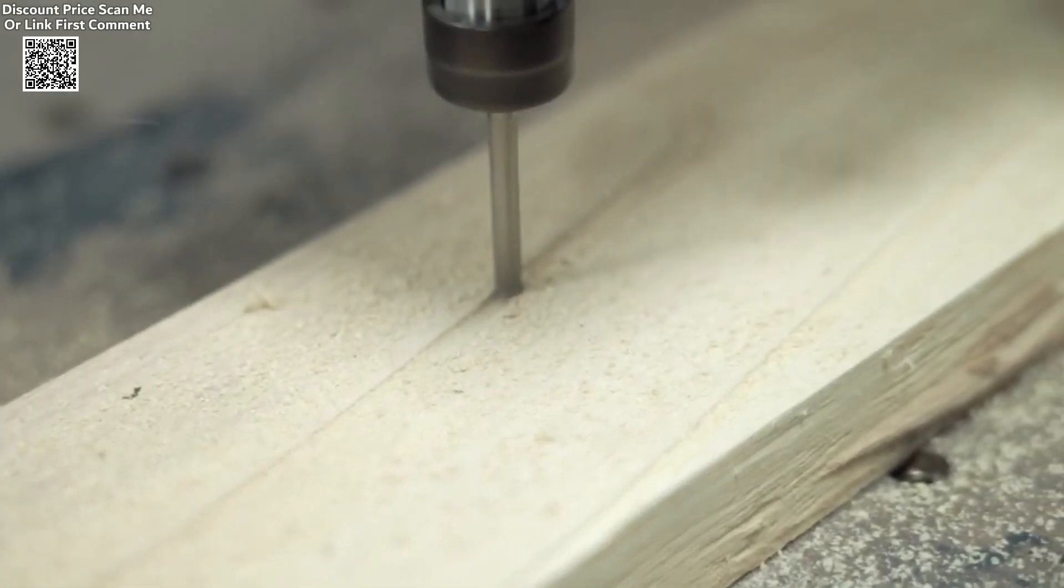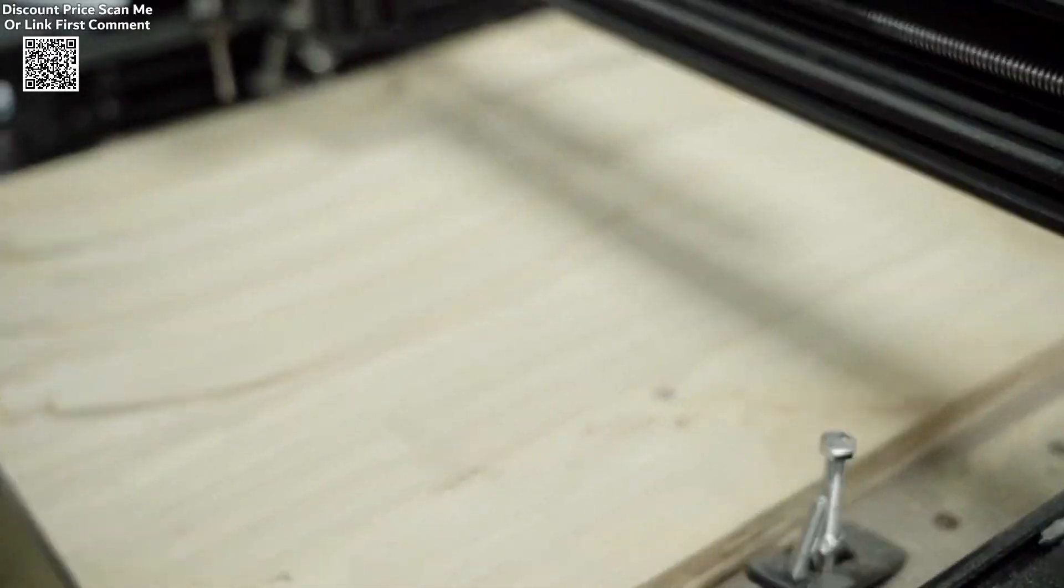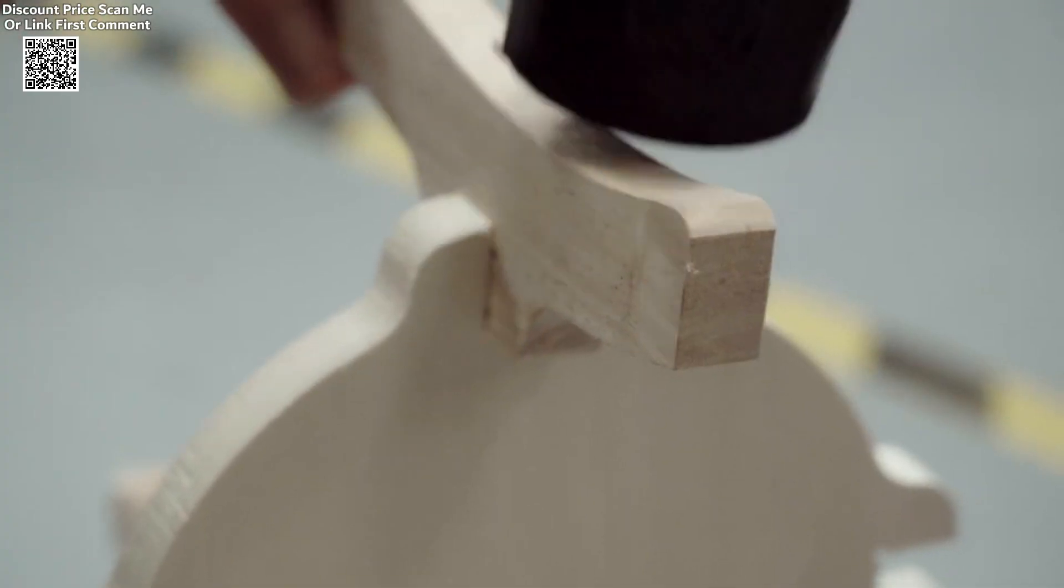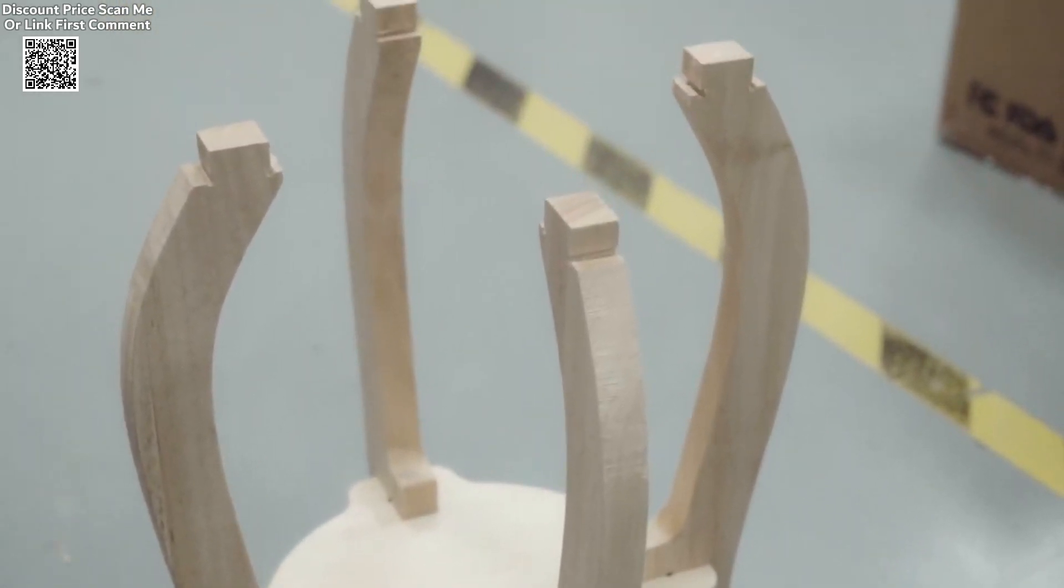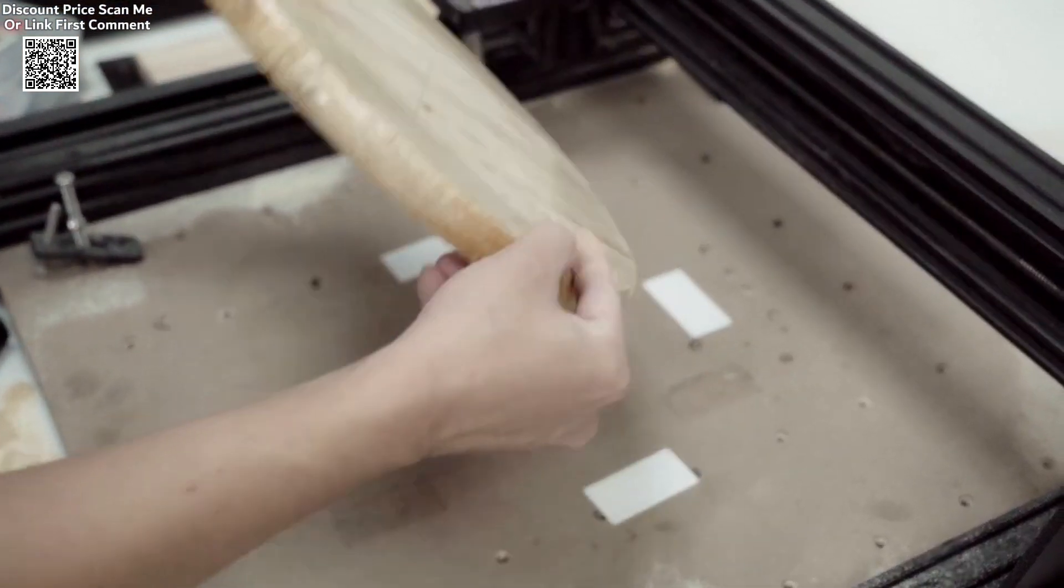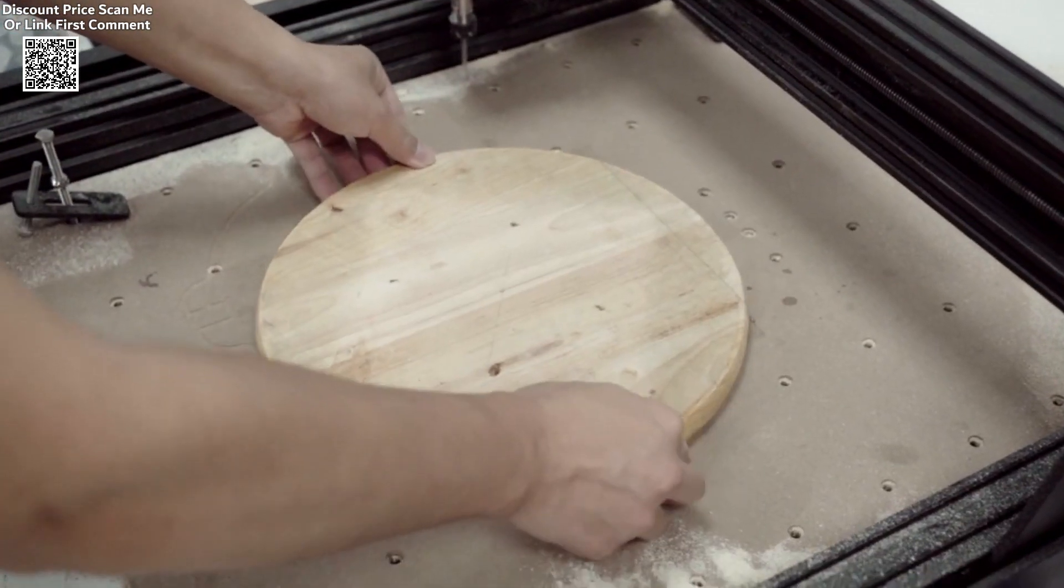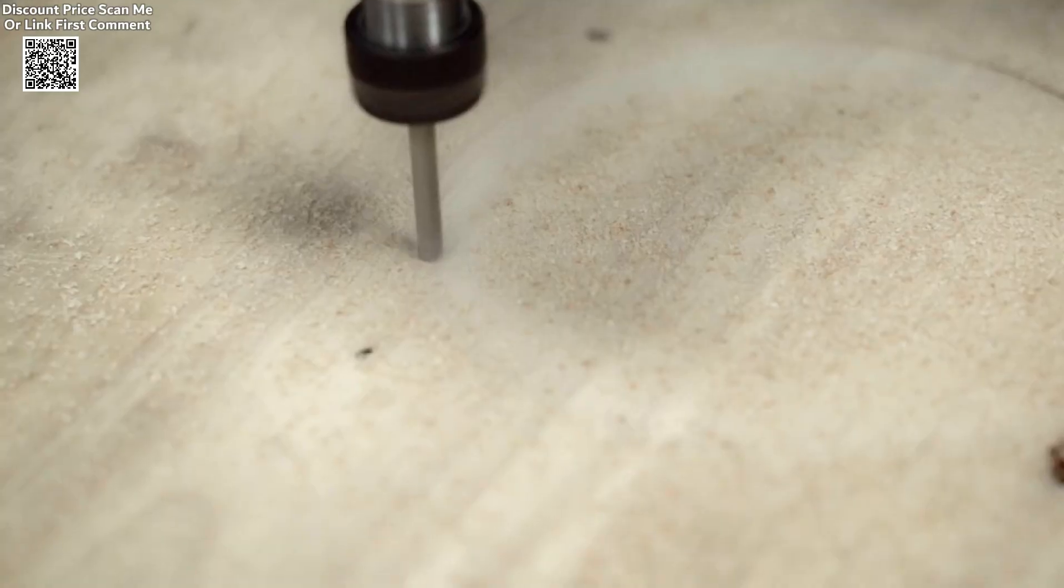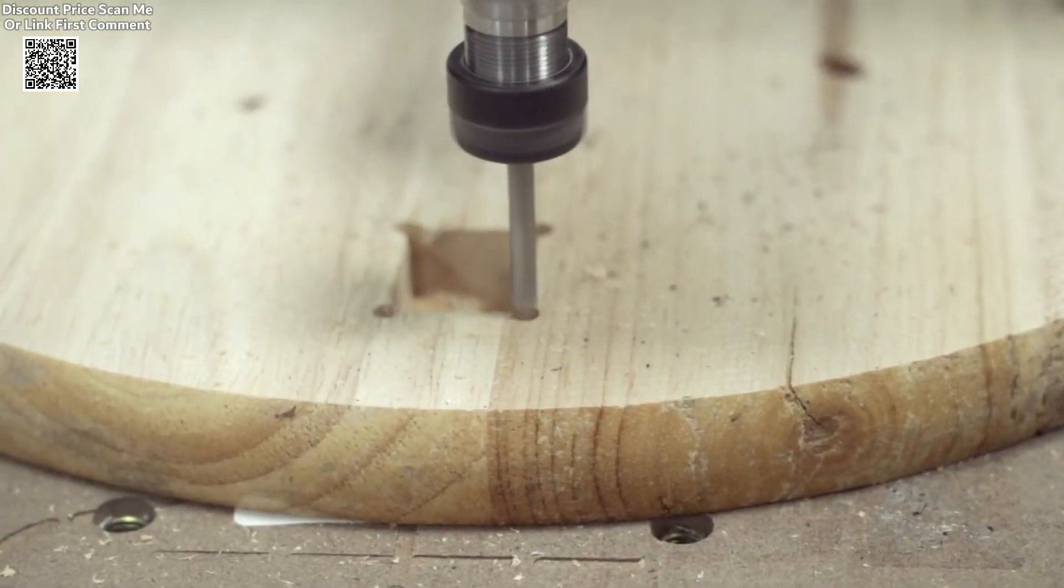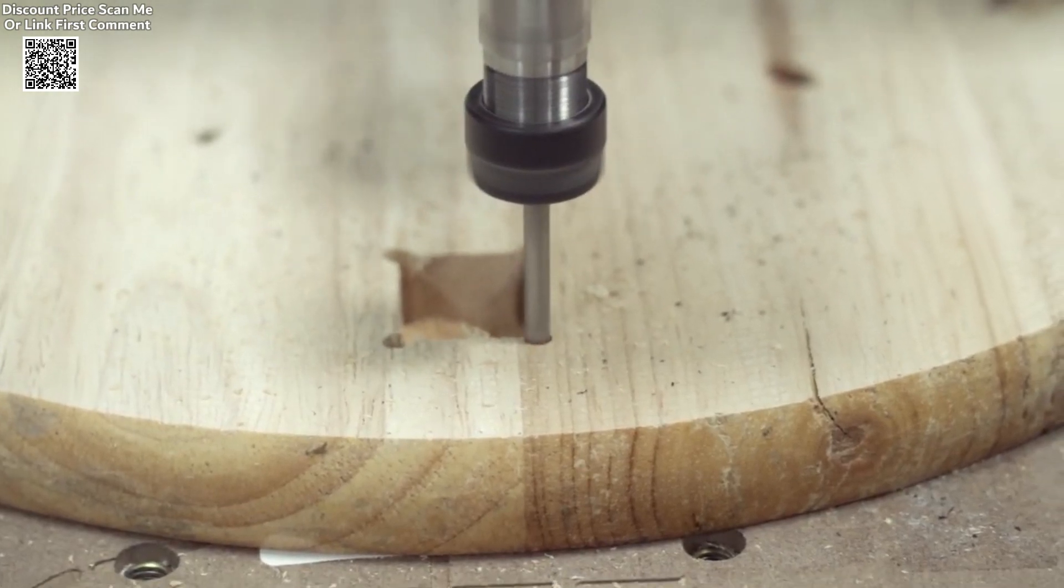The TTC450 is equipped with a powerful 775 spindle motor that operates at 8,000 rpm, delivering consistent performance for engraving and cutting tasks. For those seeking even greater capabilities, the machine allows for the replacement of the spindle with a higher-power spindle or laser module sold separately. This flexibility ensures that users can adapt the machine to meet their specific needs and achieve better engraving results.